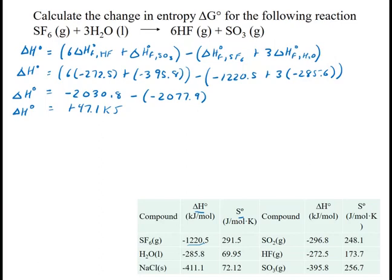Now we have to do the same thing for delta S°. Delta S° is essentially the same formula. It's going to be six times S° for HF plus S° of SO3 minus S° of SF6 plus three times S° of water.